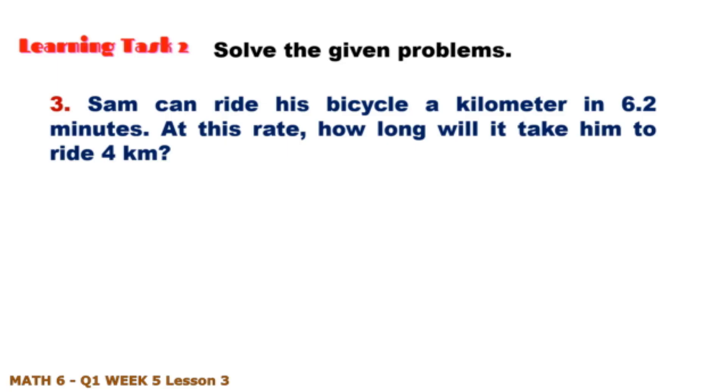Number three: Sam can ride his bicycle a kilometer in 6.2 minutes. At this rate, how long will it take him to ride four kilometers? Multiply 6.2 times 4, and that is 24.8.